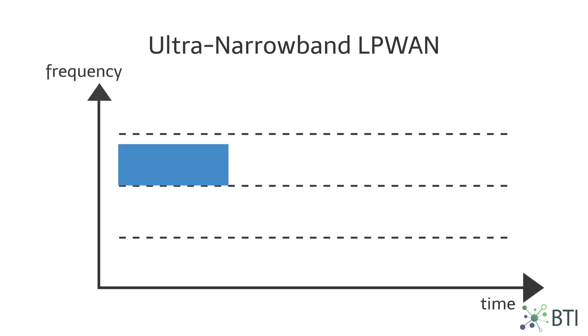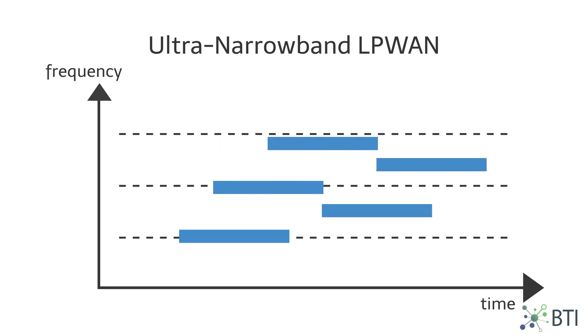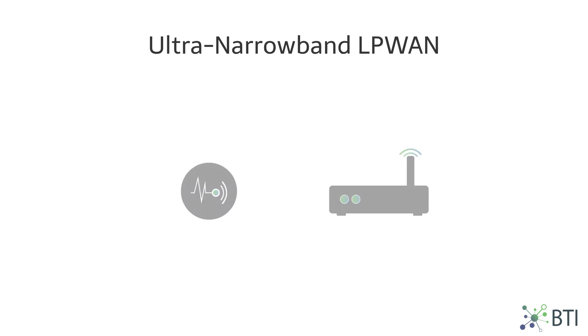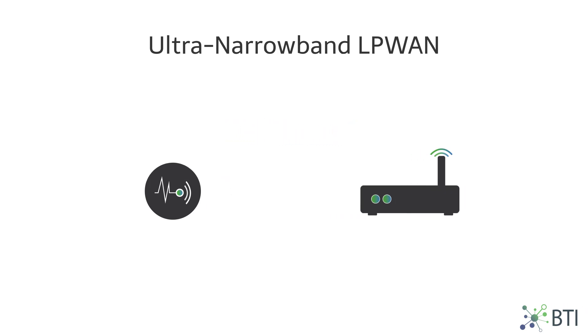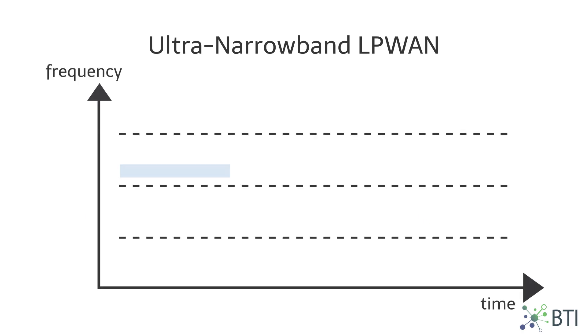2. Traditional ultra-narrow band technology. This technology uses very little bandwidth to send messages, proving to be very spectrum efficient. The low data rate enables the receiver to detect and decode messages at farther distances, thereby improving range.